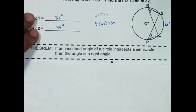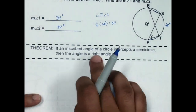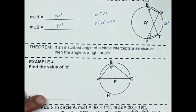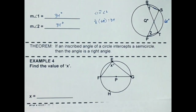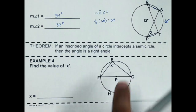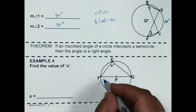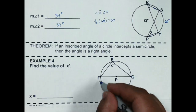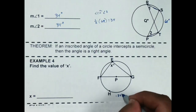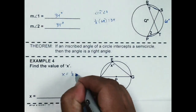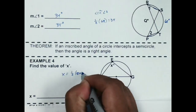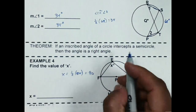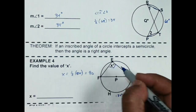The next theorem says that if an inscribed angle of a circle intercepts a semicircle, then the angle is a right angle. In number 4, FG is a diameter, so the arc from F through H to G is 180 degrees, which means X is going to be half of 180, which is 90 degrees. If you see a diameter, the inscribed angle intercepting it has to be a right angle.